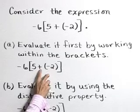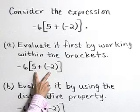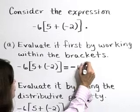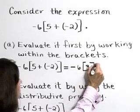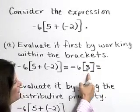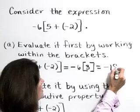So to work inside the brackets, let's add 5 plus (-2), which gives 3, and -6 times 3 is -18.